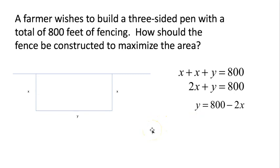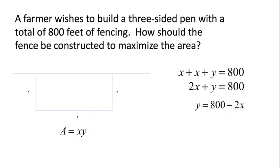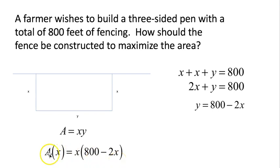Our goal is to maximize the area. The area of a rectangle is length y times width x, so area equals y times x. We know what y is — y is 800 minus 2x — so we can substitute that in. We get area as a function of one variable: A(x) equals x times (800 minus 2x). That's what we want to optimize — we want to find the highest possible value for A(x).